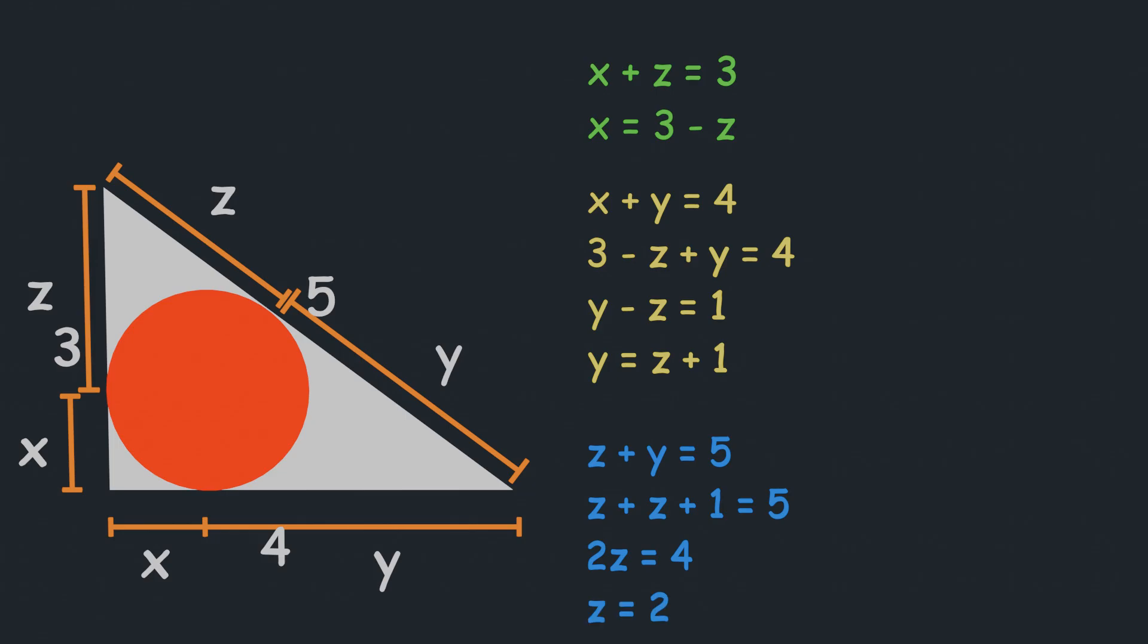Now, once we have value of z, then we can place it in second equation, which is y equals z plus 1. And we will get y equals 2 plus 1, which will get to y equals 3. And now, we can get the value of x from first equation, which is x equals 3 minus z, which will be x equals 3 minus 2, which is x equals 1.